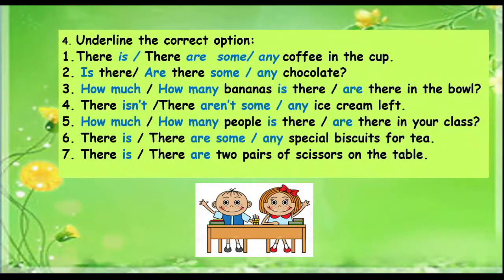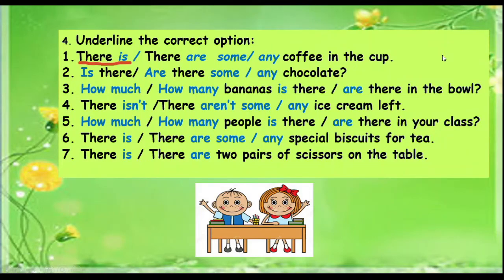Activity number four: underline the correct option. For example, what is correct — 'there is' or 'there are'? And what is correct — 'some' or 'any' coffee in the cup? Look at this example: there is some coffee in the cup. Do the same with the rest of the sentences.